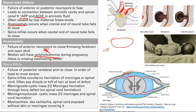Meningocele is herniation of the meninges — the wrapper of the spinal cord — out through the defect, forming a cystic mass. However, the spinal cord remains where it should be; there is no herniation of the spinal cord. Meningomyelocele, on the other hand, is a cystic mass due to herniation of both the meninges and the spinal cord. You can see both elements in the name: meninges and myelo, where myelo stands for spinal cord or neural tissue.